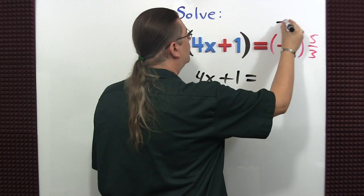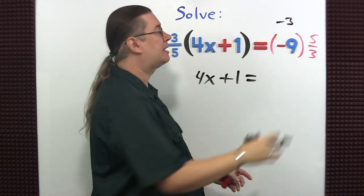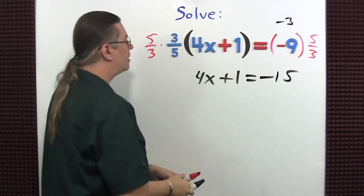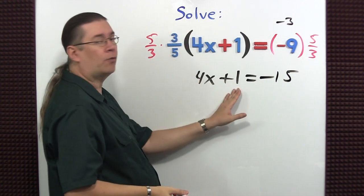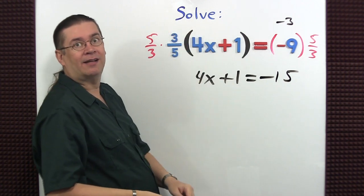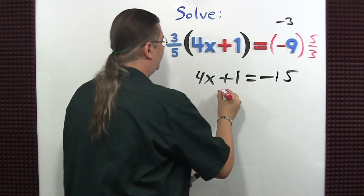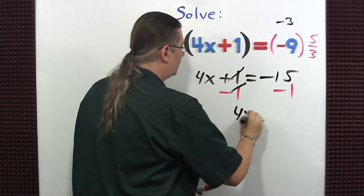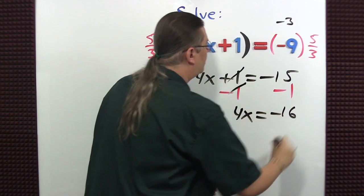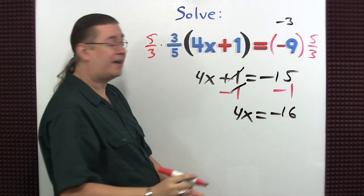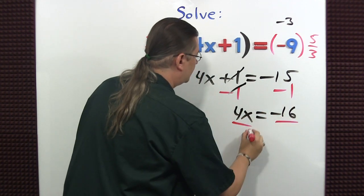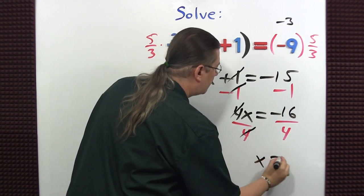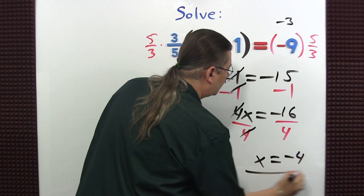Do we eliminate the 4 or the 1 next? The 1. So we subtract 1 from both sides. 4x is equal to negative 16. And finally we just divide both sides by 4. So x is going to equal negative 4.